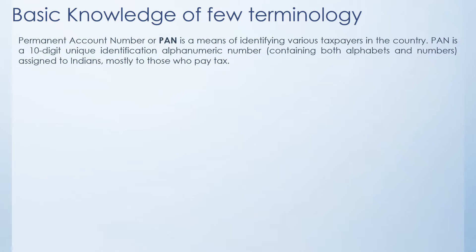The first one is the permanent account number, or the PAN number. The PAN number is a way of identifying the various taxpayers in the country and this PAN number is given by the income tax department. It consists of 10 digit unique identification alphanumeric characters and it is given to Indians, mostly those who are taxpayers in India.